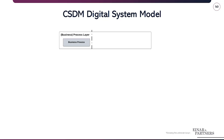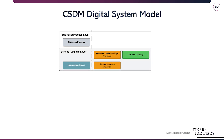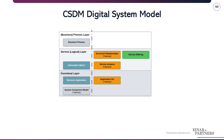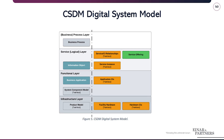Thanks André. The next exciting part is the CSDM digital system model. All of these objects we've been speaking about can be conceptualized into different layers. First is the process layer, where the business process connects. Then we have the service layer, where we find the service instance along with service offerings. We also have a functional layer containing business applications and various application CIs. Finally, an infrastructure layer with hardware CIs, product models, and more. This digital system model will simplify where different objects belong depending on their purpose and functionality.